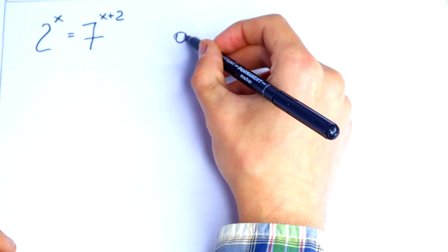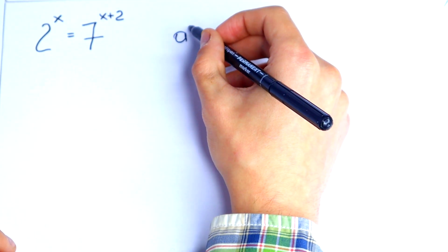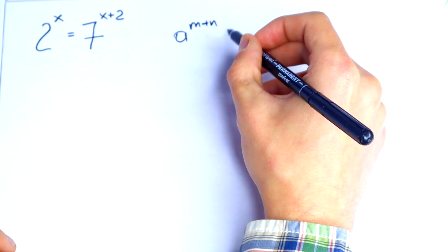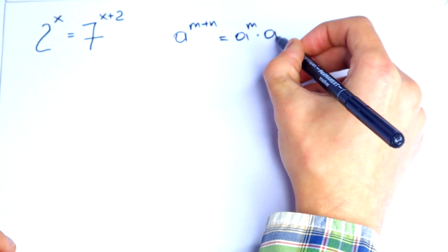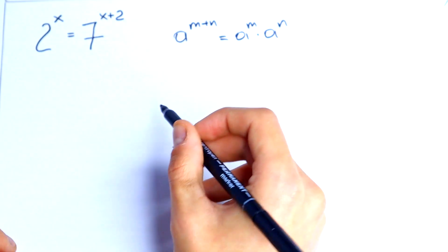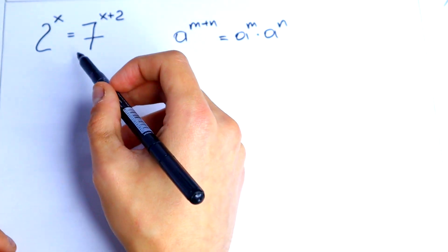We know that a to the power m plus n is equal to a to the power m times a to the power n. Let's use this right here.